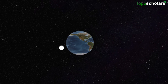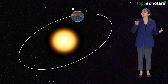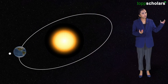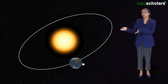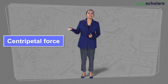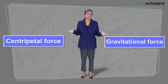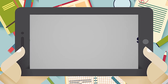The earth attracts the moon and the earth is attracted towards the sun. Yet, the moon never collides with the earth, nor does the earth plunge into the sun. This is because the centripetal force is provided by the gravitational force of attraction. Hence, we are safe. For more such fantastic videos, follow Top Scholars.